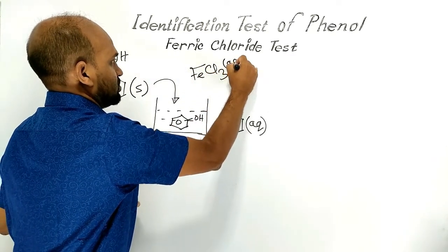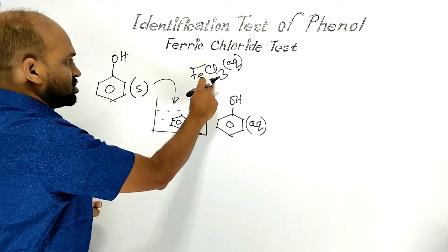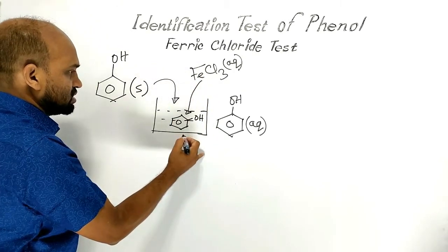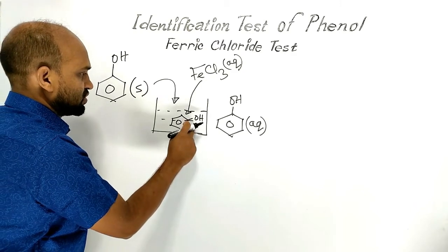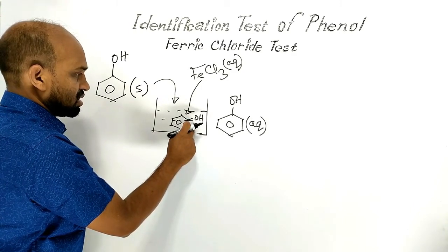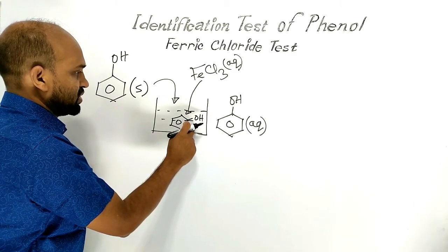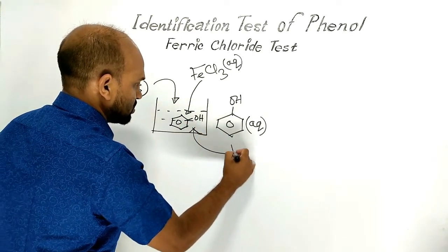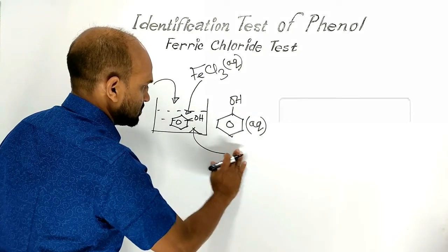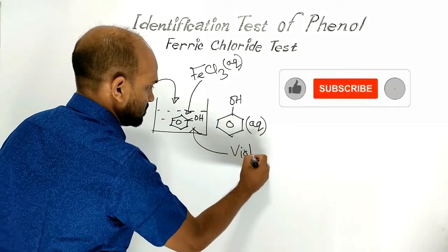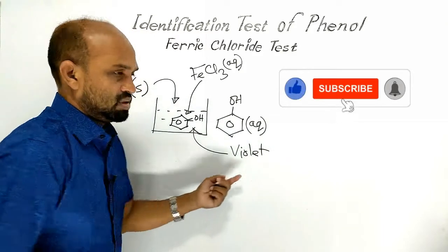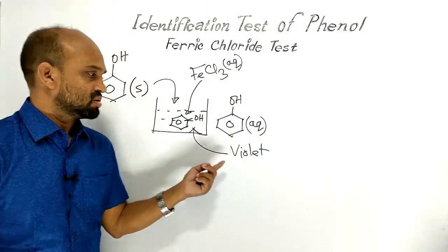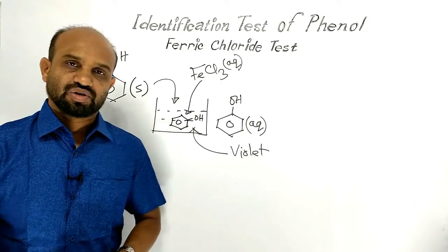When ferric chloride solution is added to the solution of phenol, the aqueous solution which is colorless or slightly pink in color turns into violet in color. This violet color solution proves that this solution contains phenol.